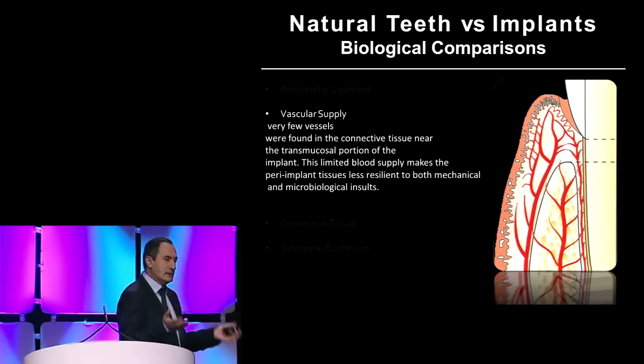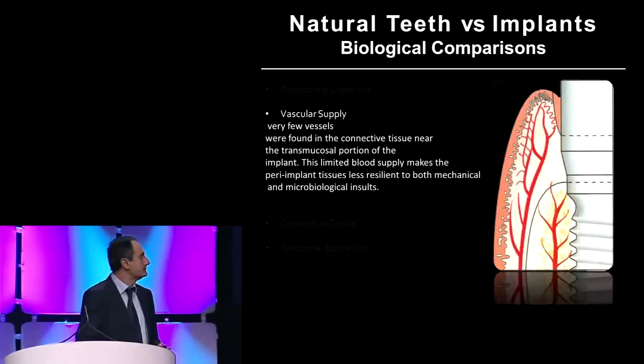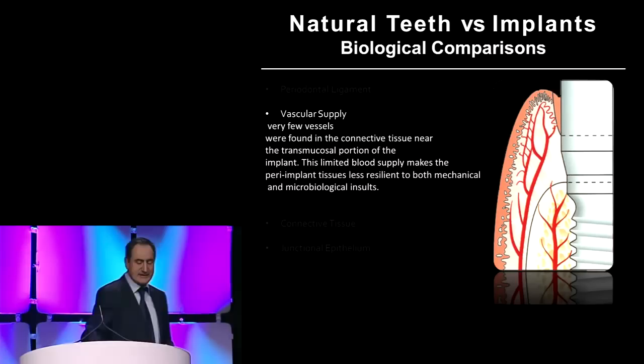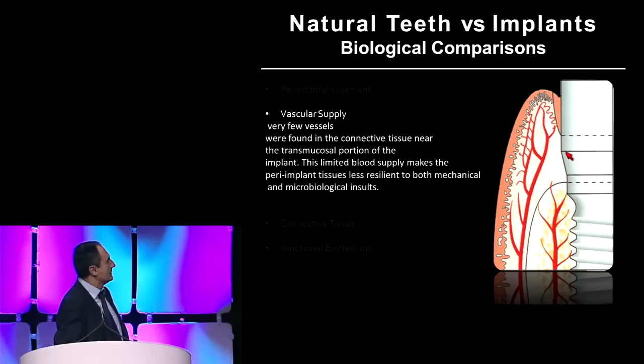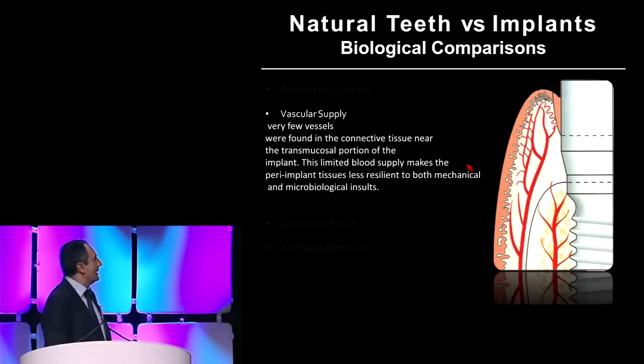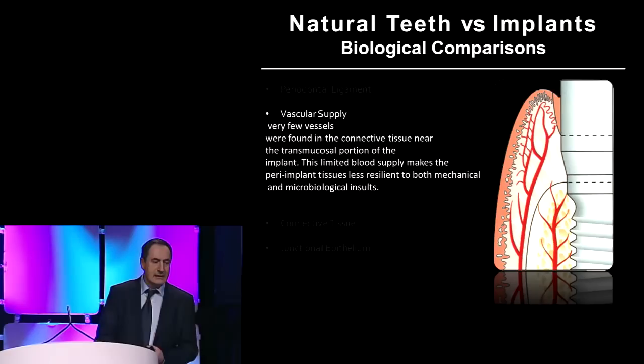So when you don't have that — like when you have an implant where the PDL is gone — you don't have all this anastomosis that takes place in this collar area, which is one of the very critical areas. Because once the collar here is broken, the infection can travel directly into the bone marrow. As it says here, limited blood supply makes the peri-implant tissues less resilient to both mechanical and microbiological insults.